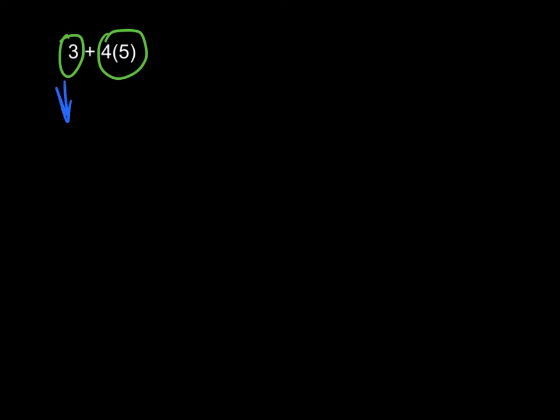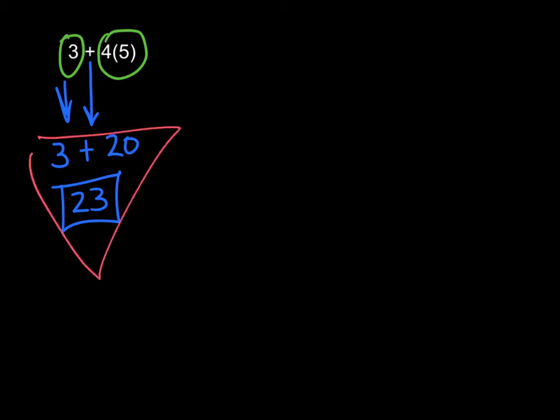So 3, there's nothing that needs to be done to it. So we have 3. We carry down our symbol. We're adding. And 4 times 5 is 20. And then we can go from there and say 3 plus 20 gives us 23. And that's all that we're looking to do. So once again, circle your terms, which are separated by addition and subtraction symbols. Solve what you circled and then work your way down.